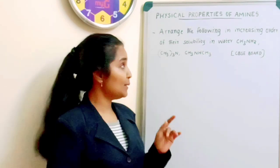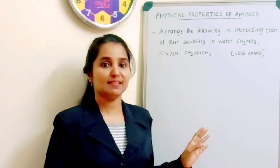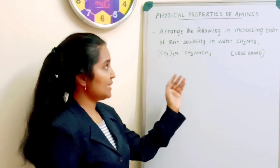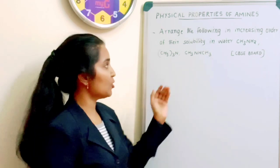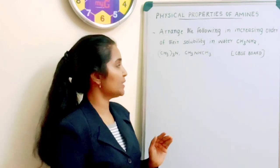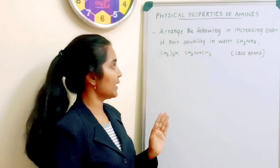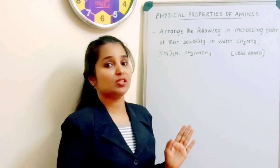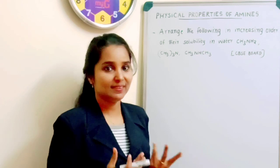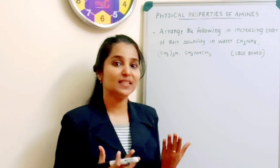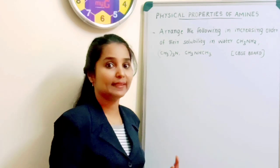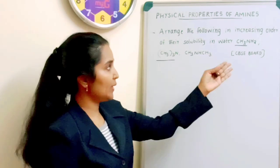Here we have another important question that is asked in the CBSE exam. And it is very important. Arrange the following in increasing order of their solubility in water. These are the amines given CH3NH2, CH3CH2NH2, and CH3NHCH3. You know that amines are soluble in water because they can form intermolecular hydrogen bonding. And what is present along with amine? That is only the question now.